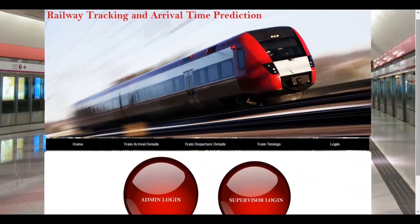This project is a demonstration of railway tracking and arrival time prediction. The railway tracking and arrival time prediction system will help commuters get information about train timing and also shows information on whether the train is on time or not. If the system finds any delay in a train due to a signal, it will automatically update the train timing at the next station and display it to viewers.